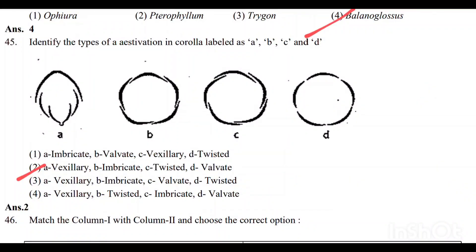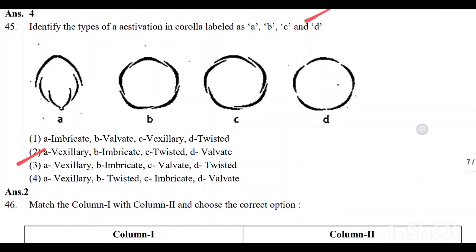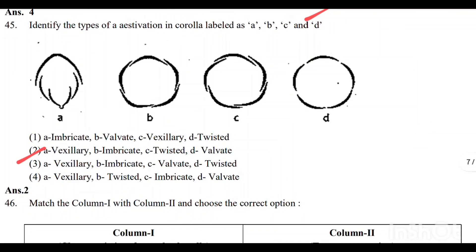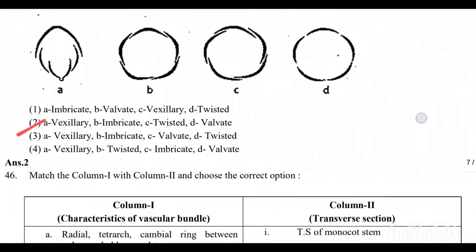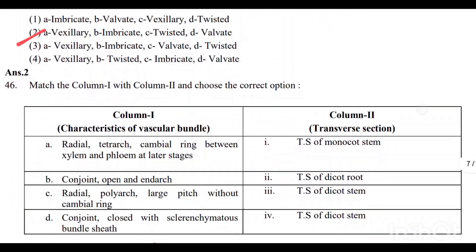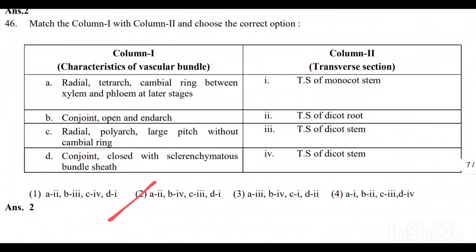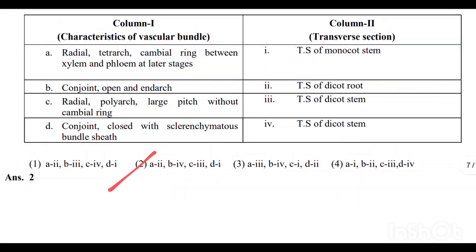Question number 44: Option 4 is the correct answer. Question number 45: Option 2 is the correct answer — A is valvate, B is imbricate, C is twisted, and D is aestivation. Question number 46: Option 2 is the correct answer.